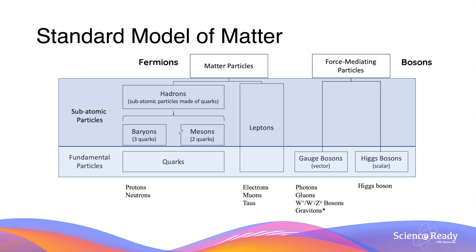So to summarize fermions: they consist of quarks and leptons, and depending on quark combinations, we can have baryons, mesons, or hadrons in general. Now we'll talk about the force-mediating particles called bosons.